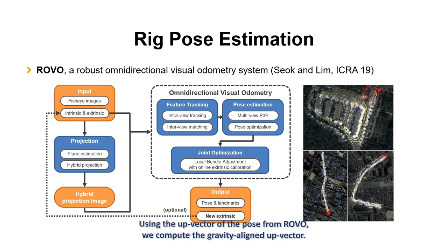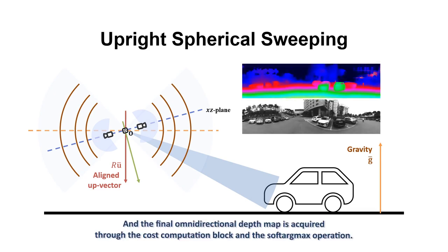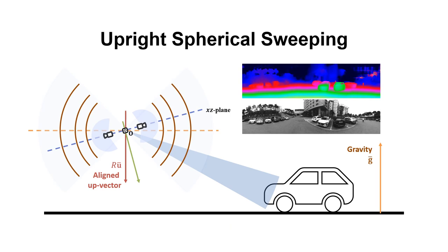Using the up vector of the pose from ROVO, we compute the gravity aligned up vector. With the gravity aligned up vector, we warp the unary features onto the aligned spheres. And the final omnidirectional depth map is acquired through the cost computation block and the soft argmax operation. This successfully generates the upright and stabilized omnidirectional depth and the panorama image.